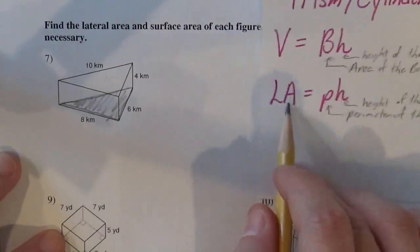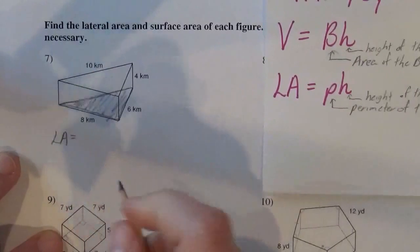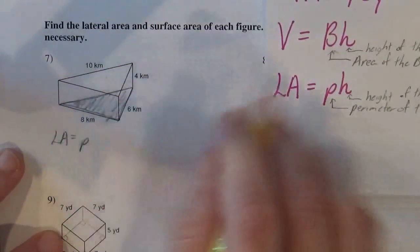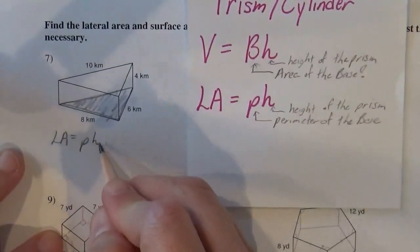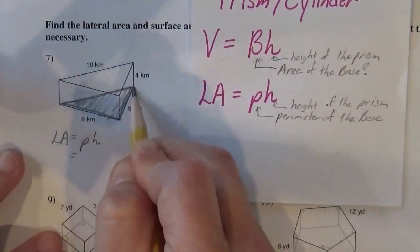And so I want to find my lateral area. And my lateral area is going to be the perimeter of the base times the height. So I've shaded the base, I know where my base is, and I just need the perimeter of this thing.